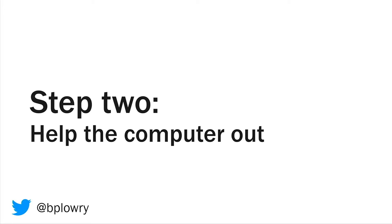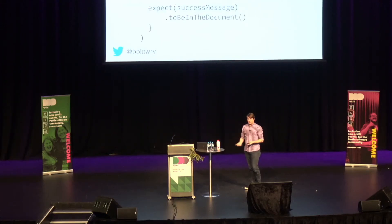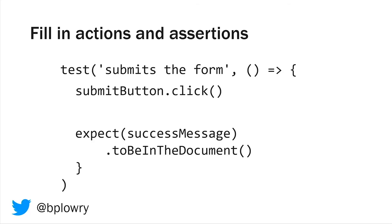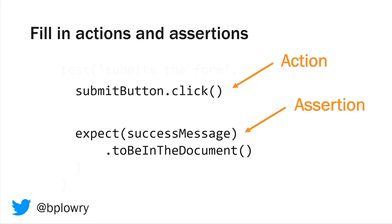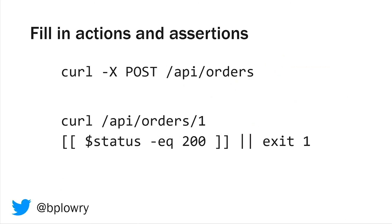Step one was to create an abstract model. Step two is to help the computer out. Computers are really smart, but they don't know everything we're trying to do — they don't know how to test the system, but once you tell them how, they can do it for you. We've got to tell the system how to test it, which means filling in the actions and the assertions. You may already have a test that looks like this where you click a submit button and then look for a success message to appear — these are the important bits. And it's not just clicking buttons in the UI; this example using curl would call an API and check the results.